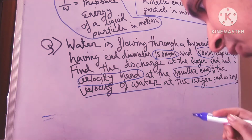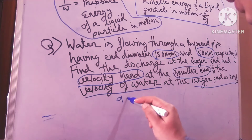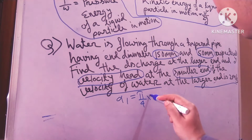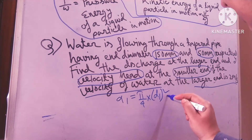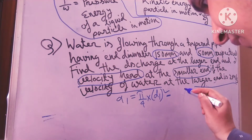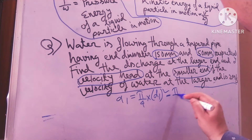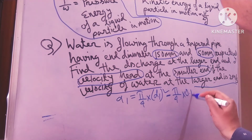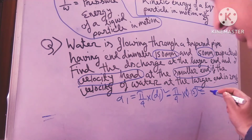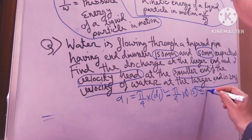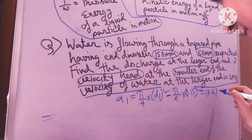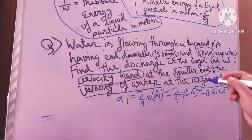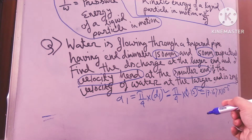Now friends, you have to remember: A1 equals pi by 4 into d1 squared, and it is pi by 4 into 0.15 squared. So it is 17.67 into 10 to the power minus 3 meter squared.